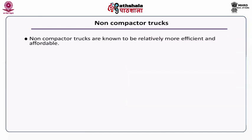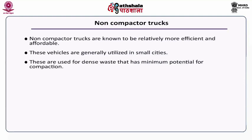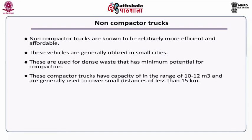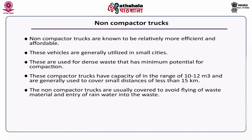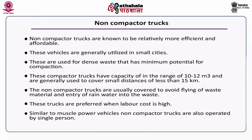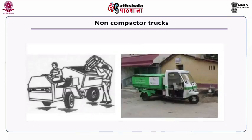The next type of collection vehicle is the non-compacted truck, which is relatively more efficient and affordable. These vehicles are generally utilized in small cities where the density of waste is not high and compaction is not required. These trucks have a capacity in the range of 10 to 12 meter cube and are generally used to cover a small distance of less than 15 kilometers. Non-compacted trucks are usually covered to avoid flying of waste material and entry of rainwater into the waste. They are generally preferred when labor cost is very high, and similar to muscle powered vehicles, they are operated by a single person.